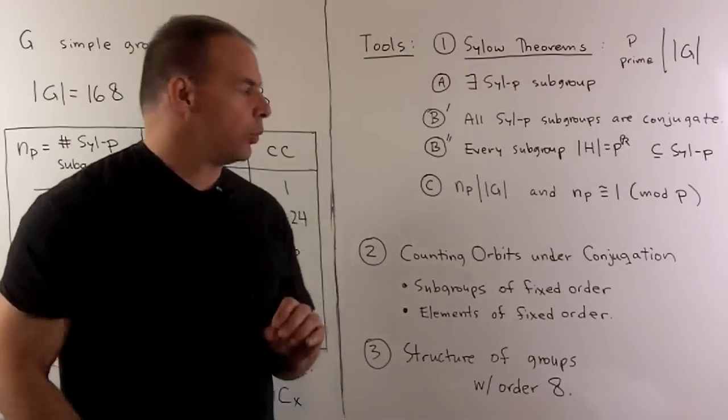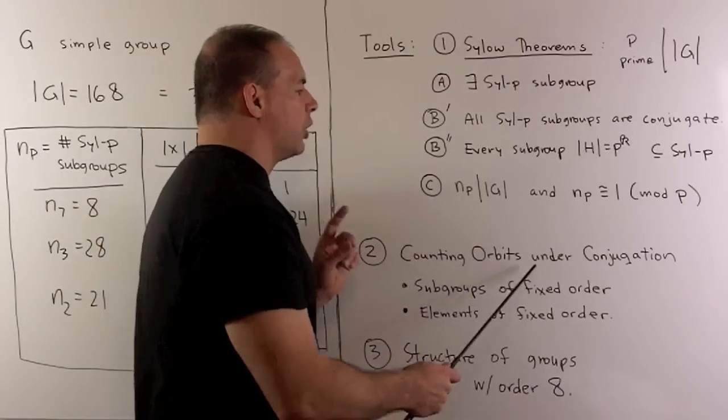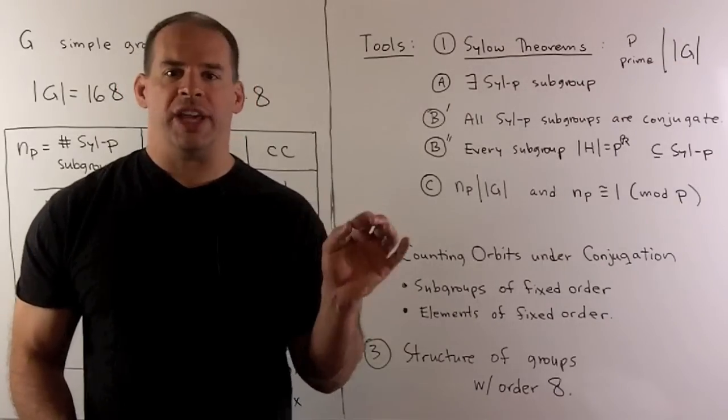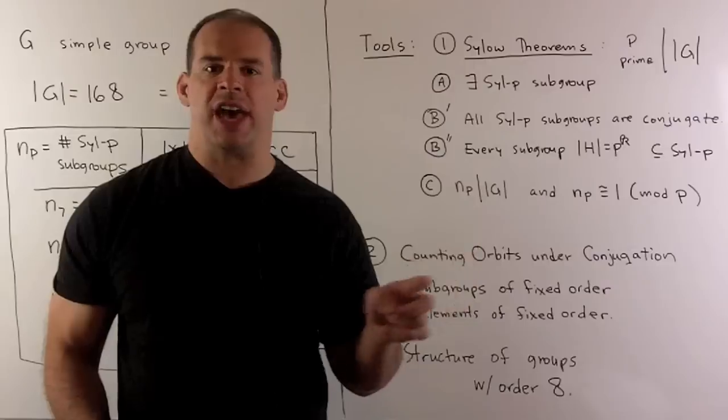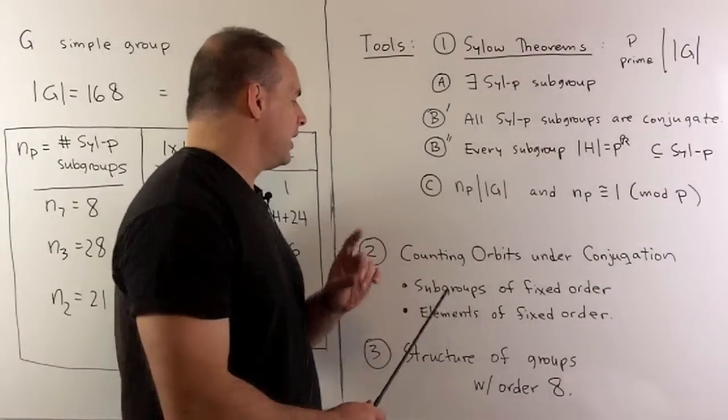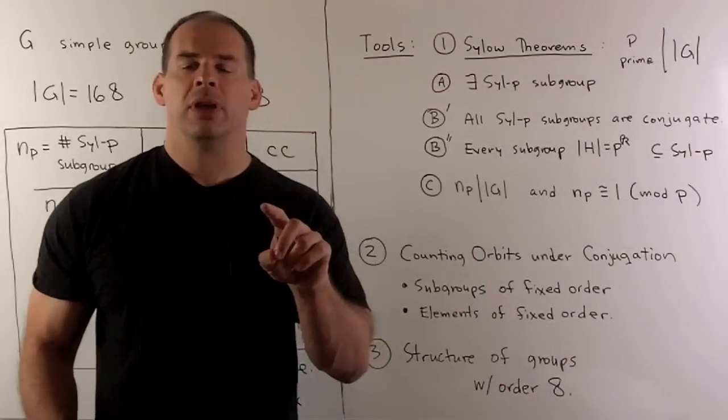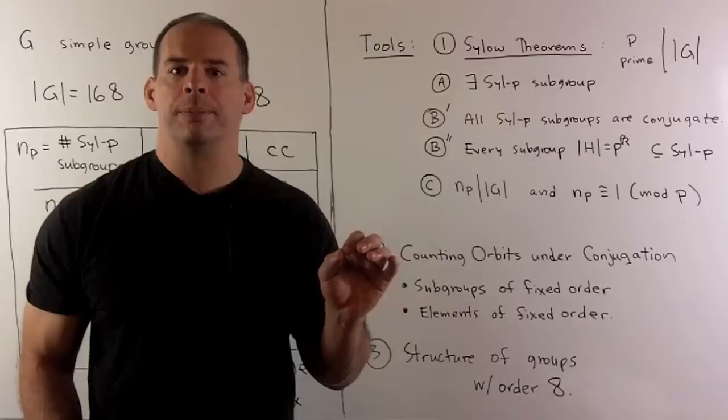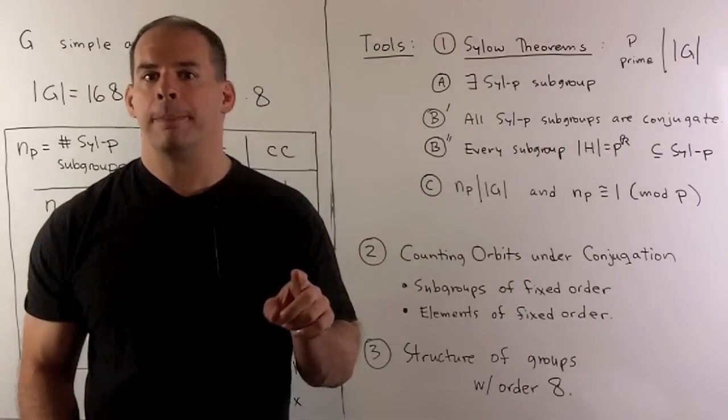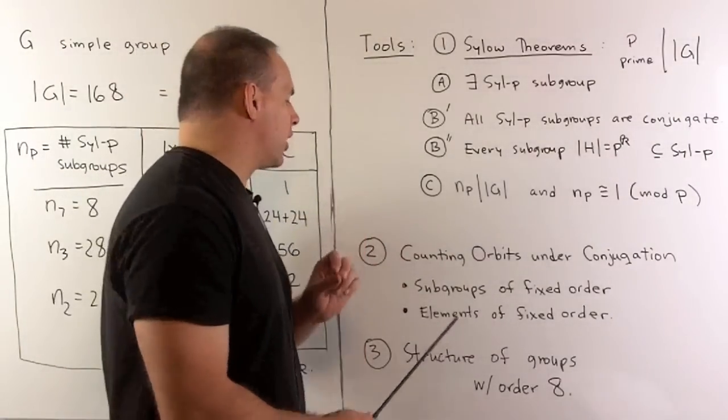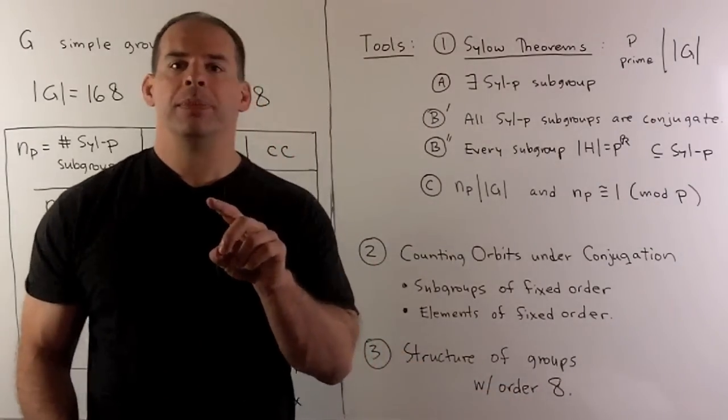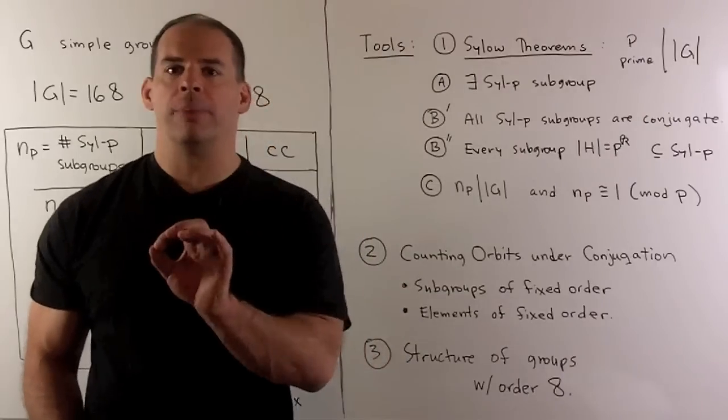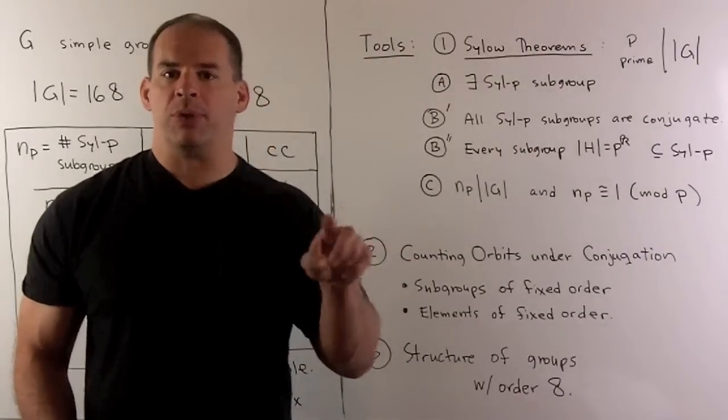Next main tool. We consider counting orbits under conjugation by elements in the group. So, when we conjugate, that's going to preserve properties of certain sets. For instance, if we consider subgroups of a fixed order, if I conjugate, they all map back to other subgroups of that fixed order. So, I can consider orbits there. We could also consider elements of a fixed order. Here, if we conjugate, the new element has the same order as the original. So, those sets are going to break up into orbits also.